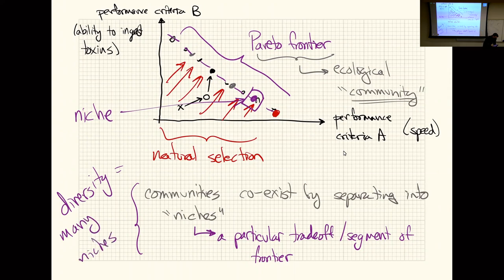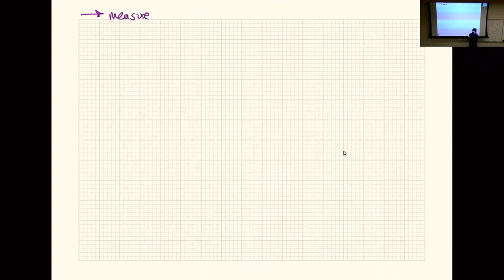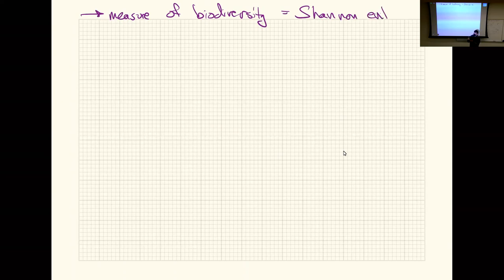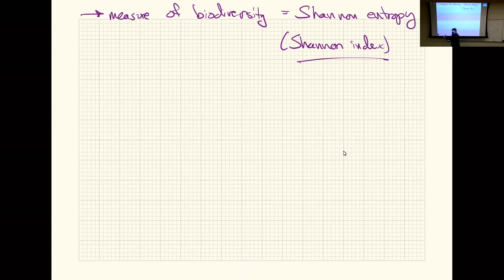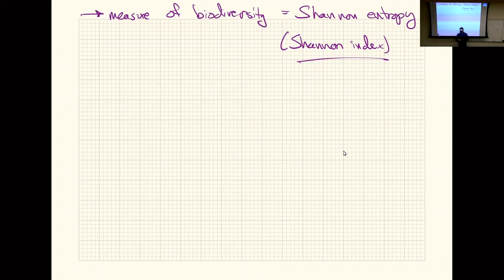A measure of biodiversity is Shannon entropy — or what ecologists often call the Shannon index. Next time I'll pick up there to show how you can calculate a Shannon index from sample data to assess diversity. This will relate to the ecological cycles discussed in the chapter reading. I don't want to keep you any longer, so let's go to the attendance slide.